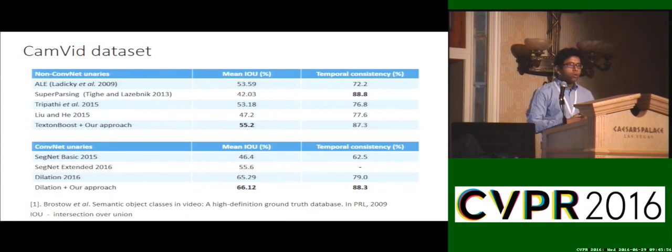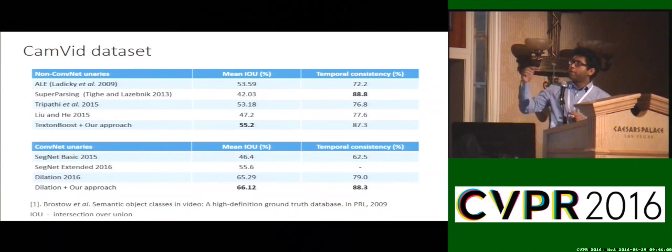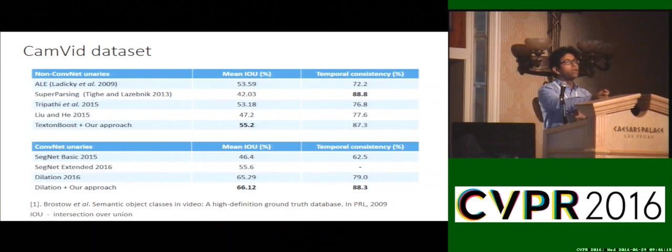Let's look at the quantitative results on CamVid. We have evaluated our method using two categories of unaries, both conv-net and non-conv-net. Our method achieves state-of-the-art performance in intersection over union. Since ground truth is not available for every frame, we come up with a novel measure for temporal consistency. We take tracks and see if the labels are consistent. As you can see, our method is both temporally consistent and much more accurate.